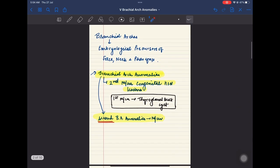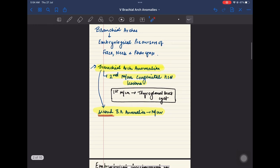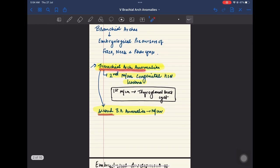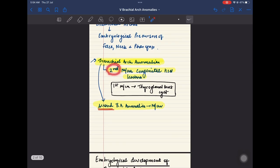What are branchial arches? These are the embryological precursors of face, neck and pharynx. What are branchial arch anomalies then? They are the second most common congenital head and neck lesions. The first most common being the thyroglossal duct cysts. The second branchial arch anomalies are the most common amongst the branchial arch anomalies.